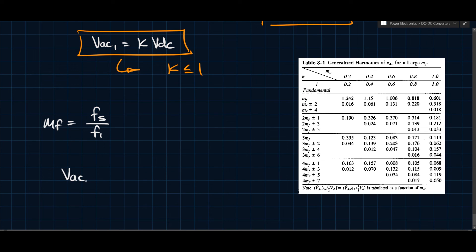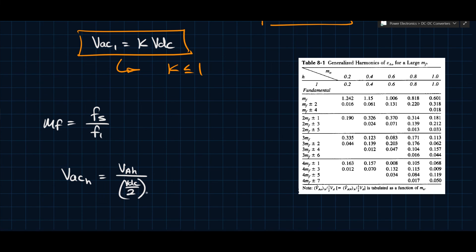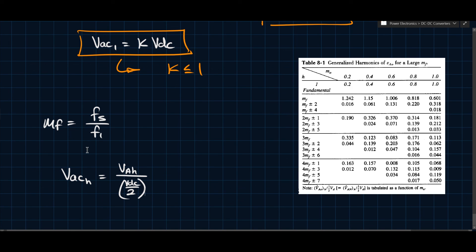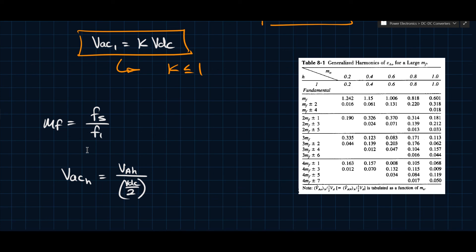Using MF and the table, we can calculate the magnitude of each harmonic H. The harmonic voltage VAC_H equals VAH divided by VDC/2 — where VAH is found from the table — giving the harmonic coefficients that dictate the magnitudes you'd expect. This formula is for the half bridge (VDC/2); for the full bridge, simply use VDC. With this table you can calculate higher-order harmonic magnitudes if there's a known resonance or expected disturbance at a particular frequency, given your voltage and frequency parameters.